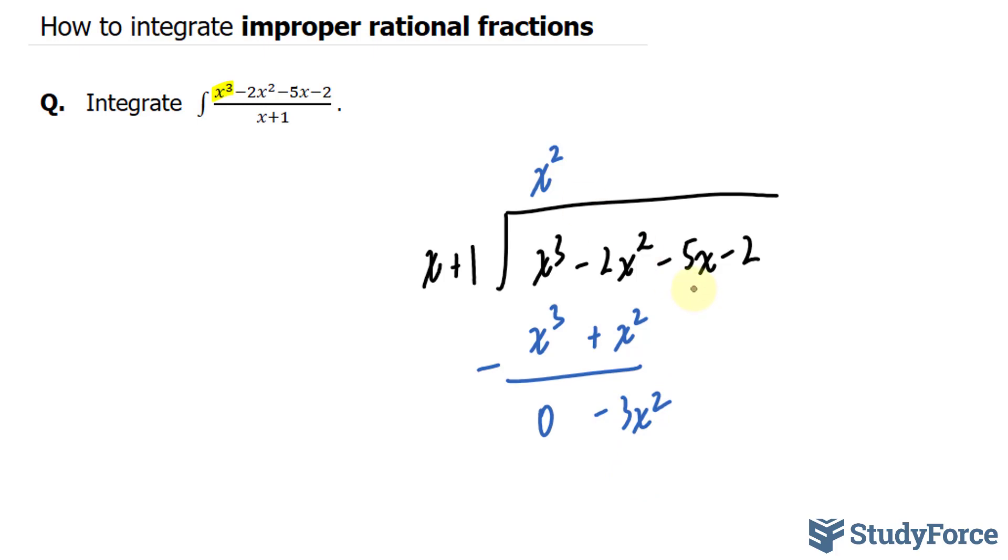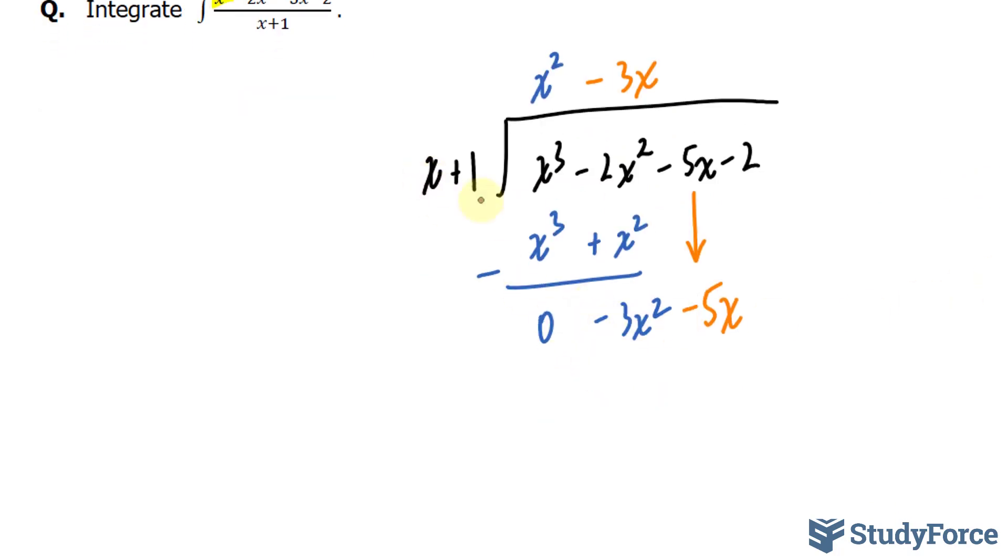Next step is to drop this term down, minus 5x, and divide negative 3x squared with x. Negative 3x squared divided by x gives us negative 3x. Multiplying this term to these two: negative 3x times x is negative 3x squared. Negative 3x times positive 1 gives us negative 3x.